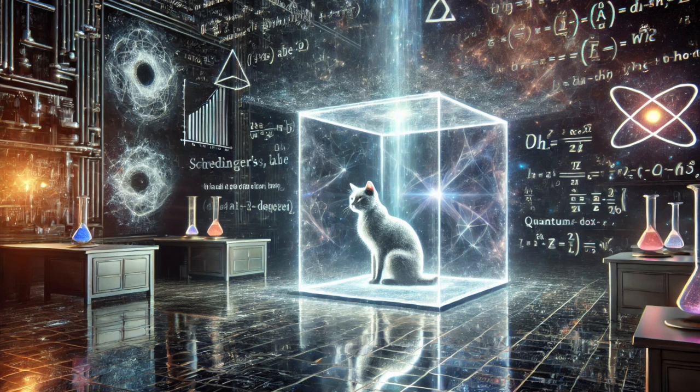Schrödinger starts by comparing the world of classical physics with this new quantum world. Right, and he uses this analogy of a triangle, which I think is really great. In classical physics, if you know a few things about a system, let's say the length of two sides of a triangle, the angle between them, well, you can figure out everything else about that triangle.